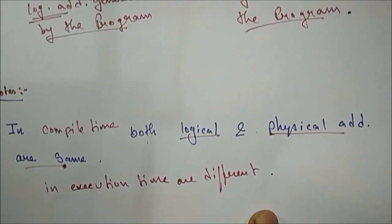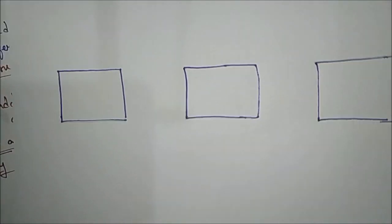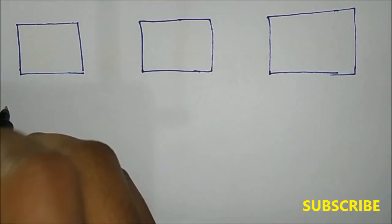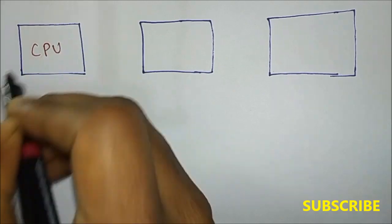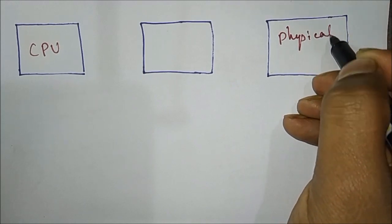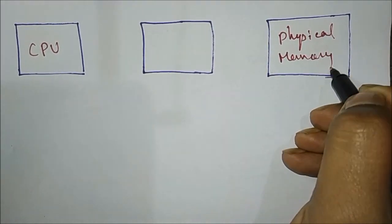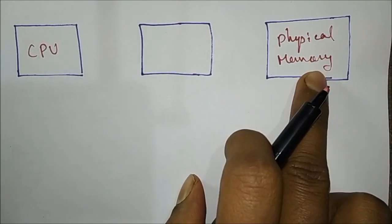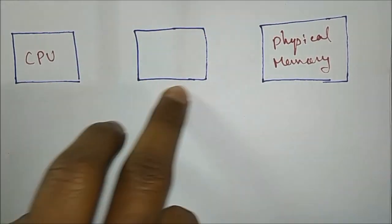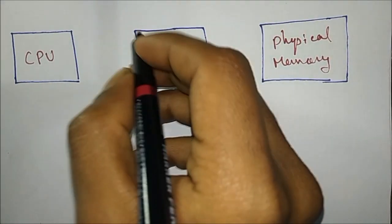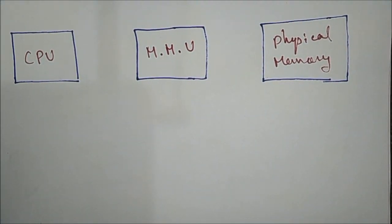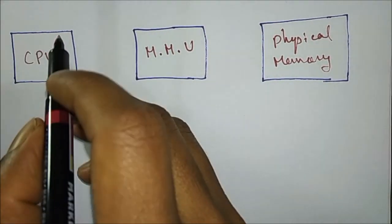Now I'll explain using a block diagram so you can understand better. There are three blocks: the first is the CPU, the second is the memory management unit, and the third is the physical memory. In between the CPU and physical memory, the memory management unit plays a vital role.